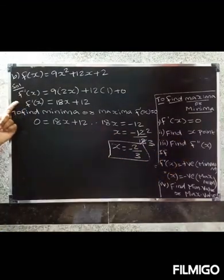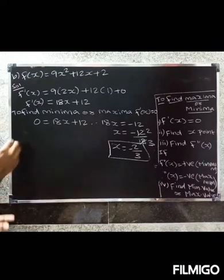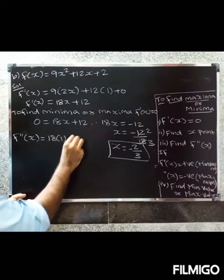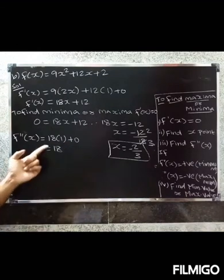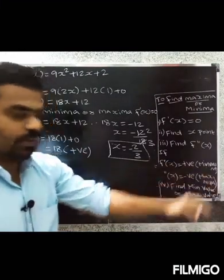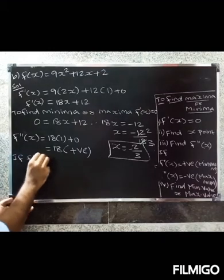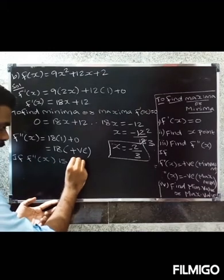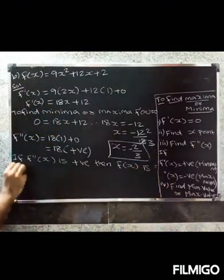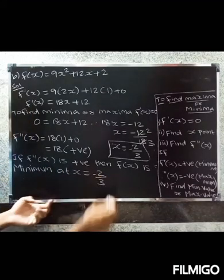Now find f''(x) to classify the critical point at x = -2/3. Differentiating f'(x) = 18x + 12 again: f''(x) = 18. Since f''(x) = 18, which is positive, f(x) is minimum at x = -2/3.